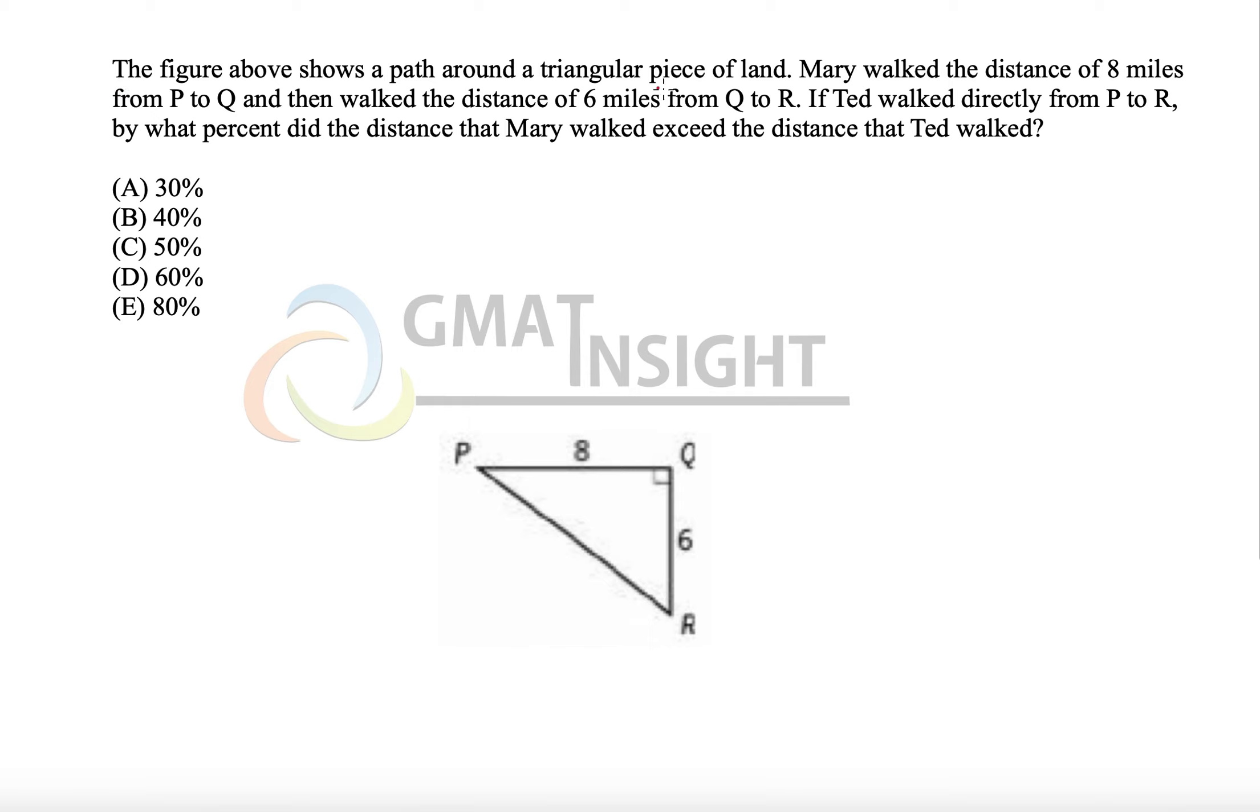The figure here shows a path around a triangular piece of land. We have PQR, a triangular piece of land. PQ is 8, QR is 6, and there is a right angle at point Q. That means using Pythagorean theorem, we can find that PR will be equal to 10. The calculation will be PR equal to 6 square plus 8 square, and the square root of that, which is square root of 100, that means 10.